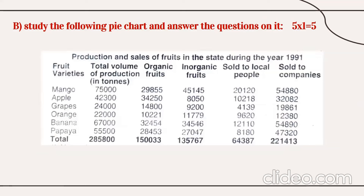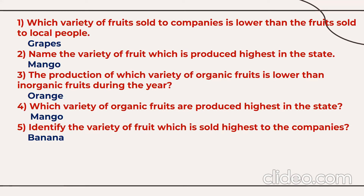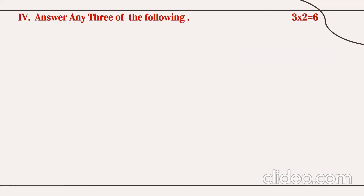Next is data interpretation, for which I've done a separate video — please go through it. You need to read a table about the production and sales of fruits in a state during 1991. The table includes total volume of production, organic fruits, inorganic fruits, amounts sold to local people, and amounts sold to companies. Based on this table, five questions will be asked. Read and analyze the table carefully to get five marks.